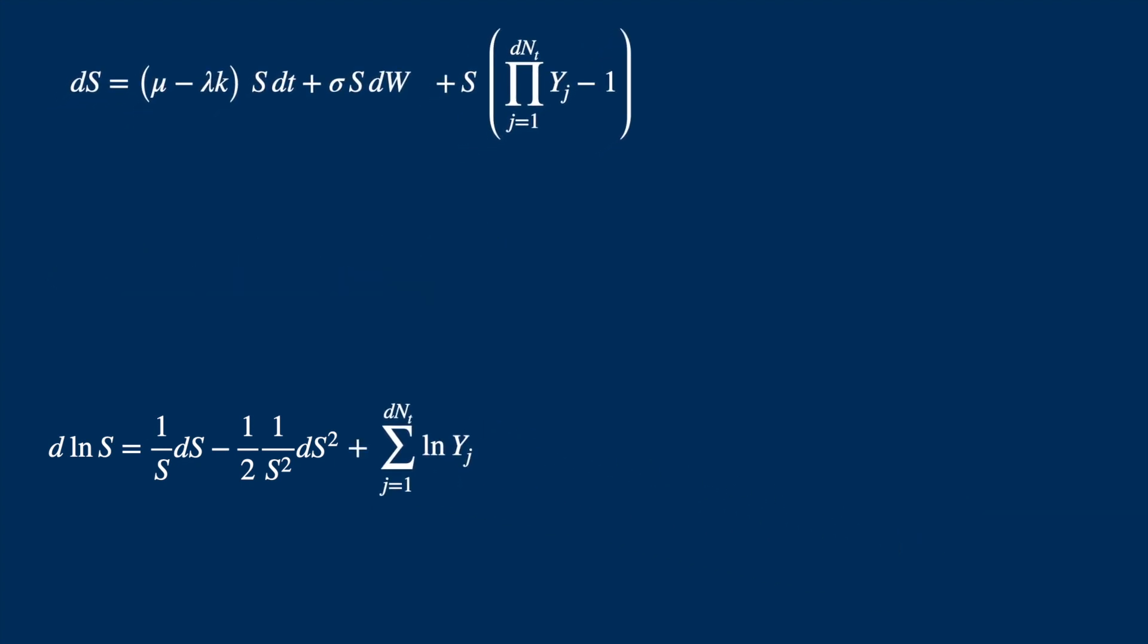And we now focus on the continuous part. We need dS divided by S. So we just shift S to the left hand side. And dS divided by S squared is then down to Ito's box. dt times dt is 0. And so is dW times dt. And dW squared is equal to dt. So it reduces to just one term.